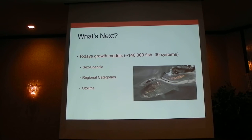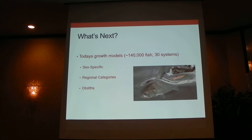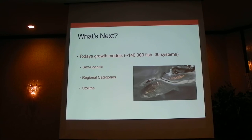What's next? We started with around 56,000 fish in 12 systems, but now we have a lot more data — around 140,000 fish and 30 river systems. So this has grown quite a bit. What you just saw was shown to the stock assessment committee, and we came up with some ways to make these models even better.